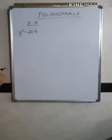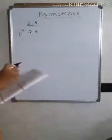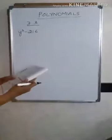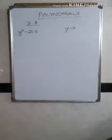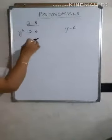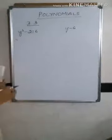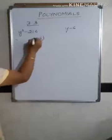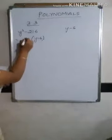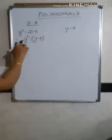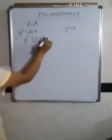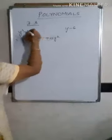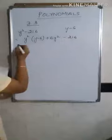Now let's take the same third problem — y³ minus 216 divided by y minus 6 — and solve it using the linear method. Each term must be expressed in terms of y minus 6. For the first term, write y minus 6, and multiply by y²: y² times y gives y³, but the extra term is y² times minus 6, which is minus 6y². Since we get minus 6y², write plus 6y². Then write minus 216 as it is.